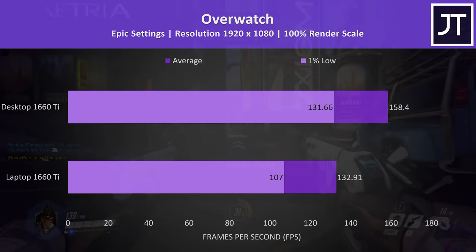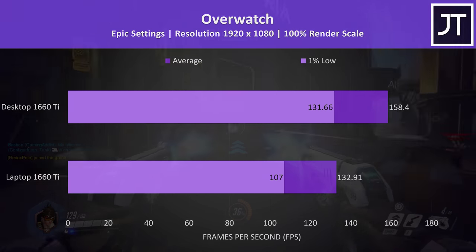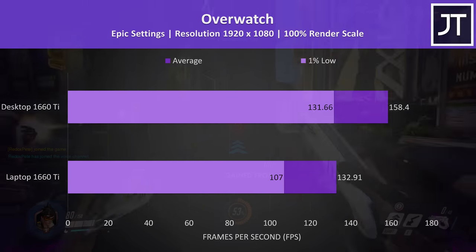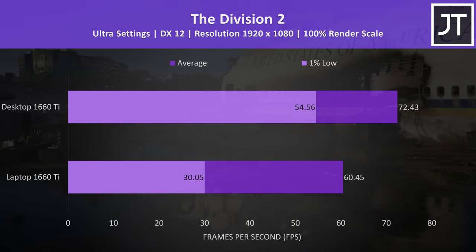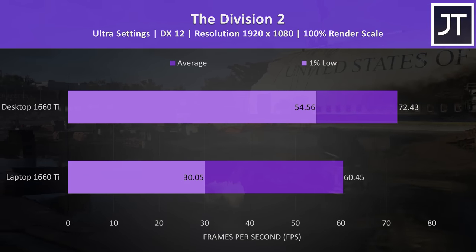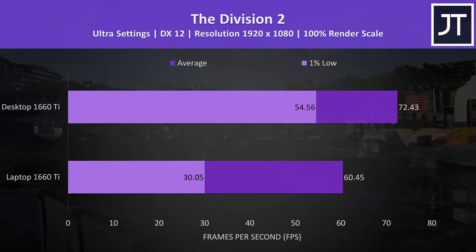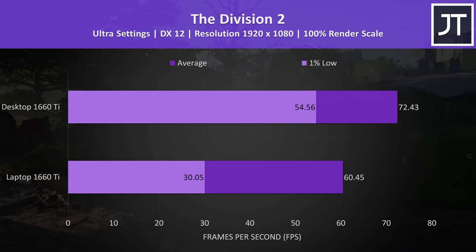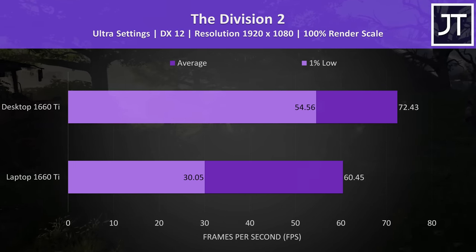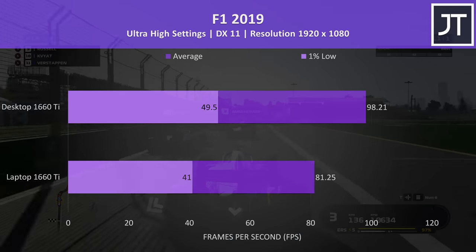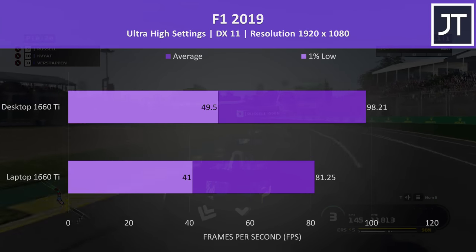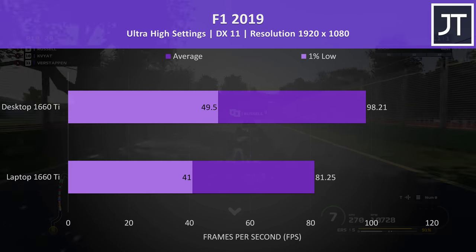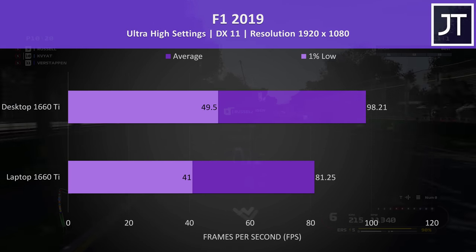Overwatch is another less demanding game, and either option can still produce excellent frame rates even with the highest epic setting preset. However the desktop still had a 19% lead in average FPS. The Division 2 was tested with the game's benchmark tool, and there was a similar 20% improvement to average frame rate, however there was a massive 81% boost to 1% low — though 1% low changes are more sensitive to the CPU. F1 2019 was also tested with the built-in benchmark, and saw the third largest improvement out of all games tested with the desktop graphics coming out 21% ahead, though there was a smaller difference between the 1% low.